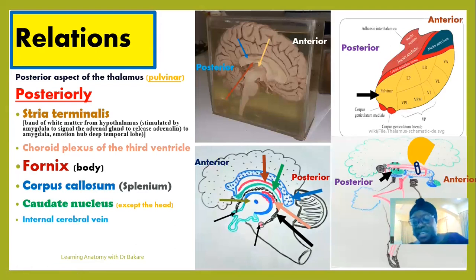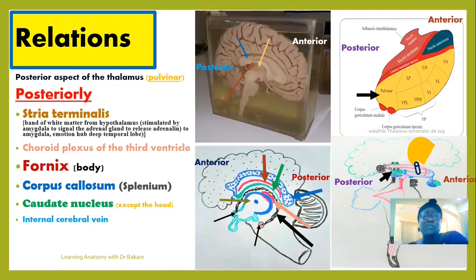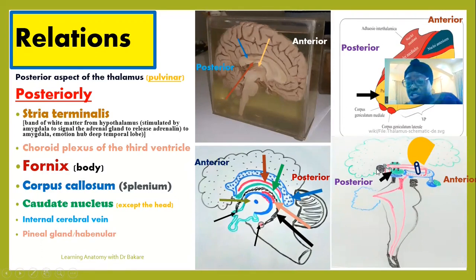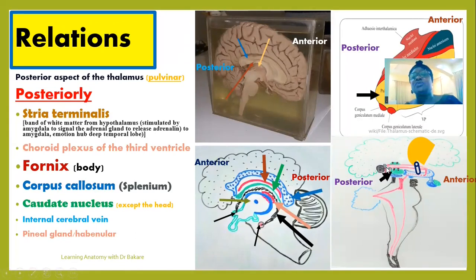We also have the internal cerebral vein extending behind, forming the posterior relation of the thalamus. Additionally, there is the pineal gland and the habenular nuclei. The pineal gland — a ball-shaped structure — is located behind the thalamus. The habenular nuclei and habenular commissure are also positioned at the posterior part of the thalamus as part of the epithalamus.